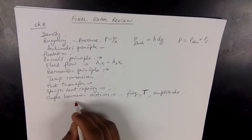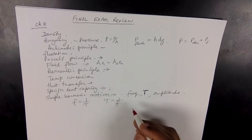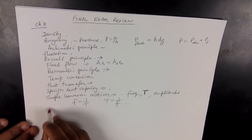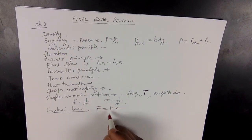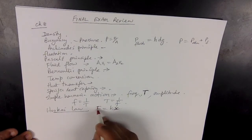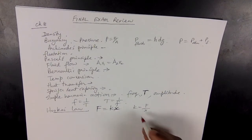The connection between frequency and time period is: frequency is 1 over time period, or time period is 1 over frequency. Frequency is measured in Hertz and time in seconds. We also went through Hooke's law: F equals Kx, where K is the spring constant or force constant, F is in Newtons, and x is the extension in meters. You should be able to find K using F over x. That is how we apply Hooke's law.